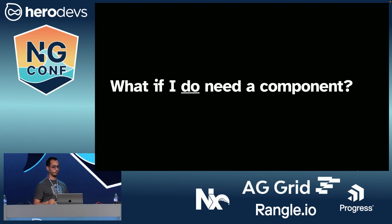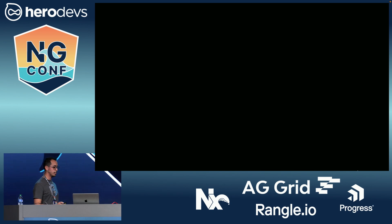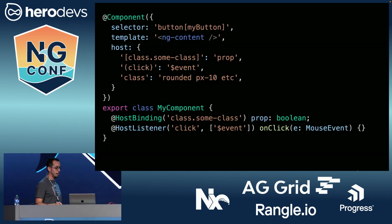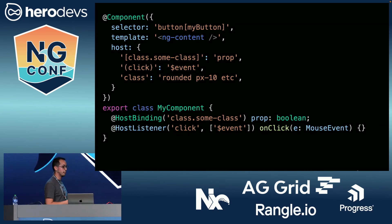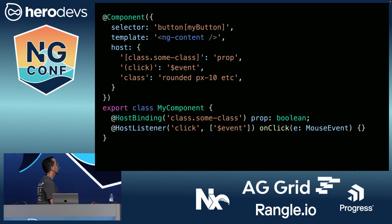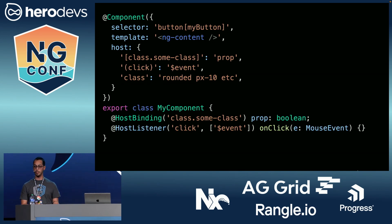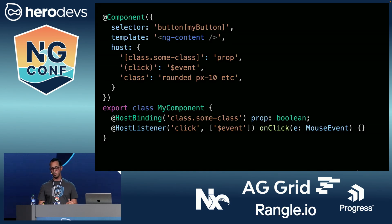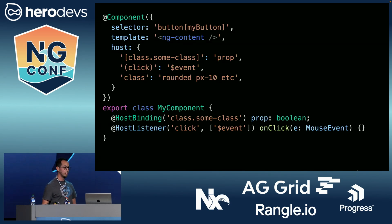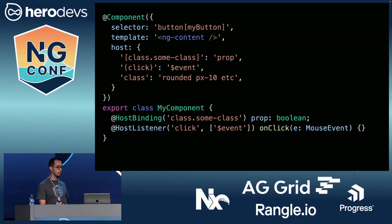What if you do need a component? In some cases, what we want is to preserve the behavior of a native DOM element. We can do that by using the native element as the selector and adding our own attribute selector as well. This pattern is used heavily in the Material and CDK component libraries — where you use input with mat-input, for example, instead of just a mat-input element. There are lots of important native browser behaviors we don't want to take away. With this, we can create an Angular-managed component that has a native element definition, and of course we can apply everything we've learned about host bindings to these types of components as well.